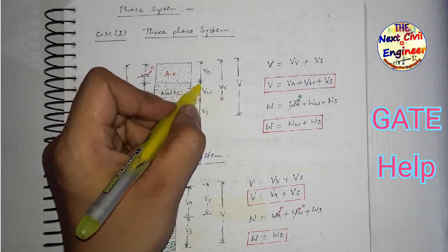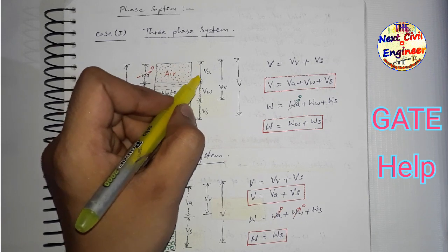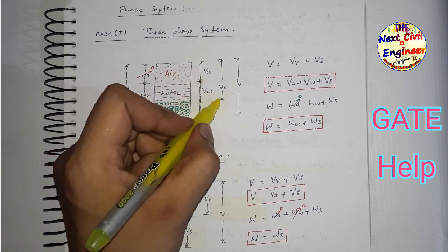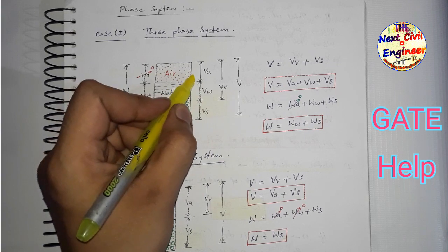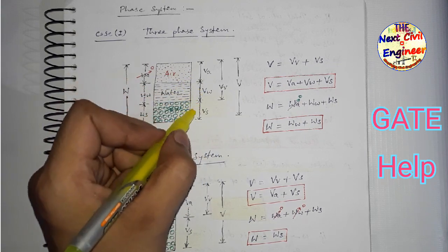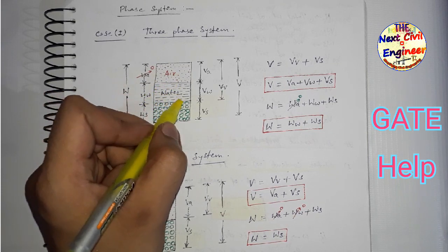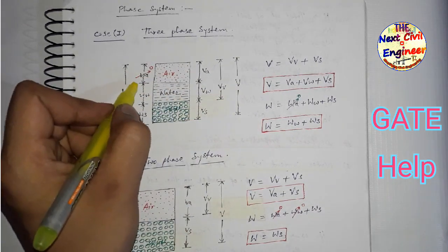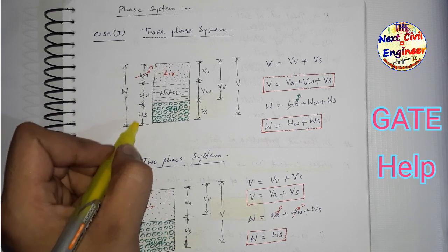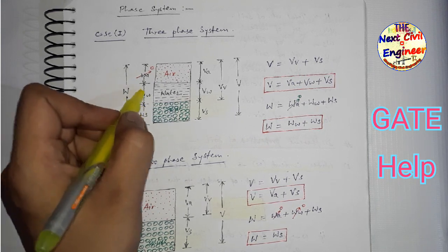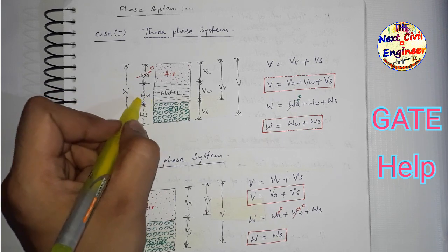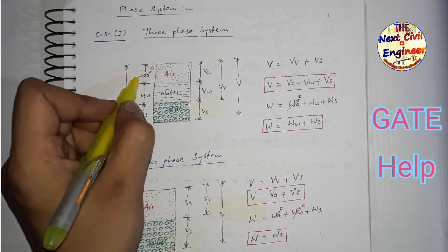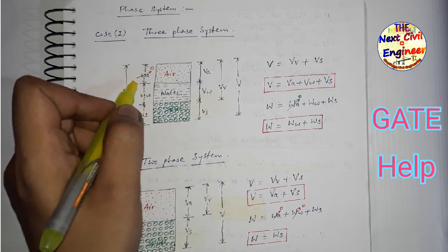इसमें Vs volume of solids है, उसी तरीके से Vw volume of water है और Va volume of air है। Volume of air और volume of water मिलके volume of voids हो जाते हैं। Voids के अंदर ही air या फिर water मौजूद हो सकता है। Weight के terms में Ws weight of solids को, Ww weight of water को और Wa weight of air को represent करता है। Weight of air हम लोग zero consider करते हैं।